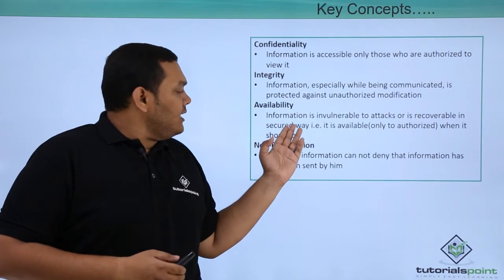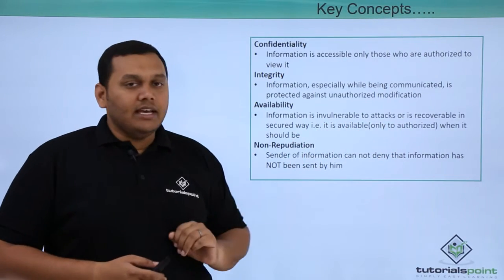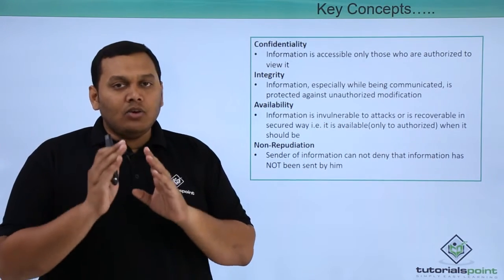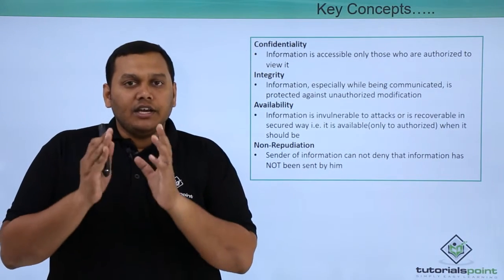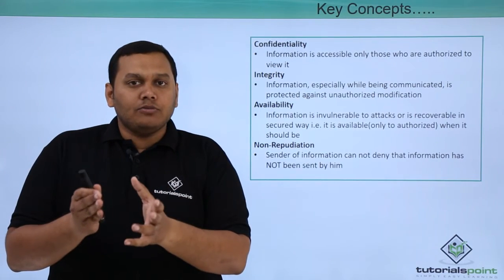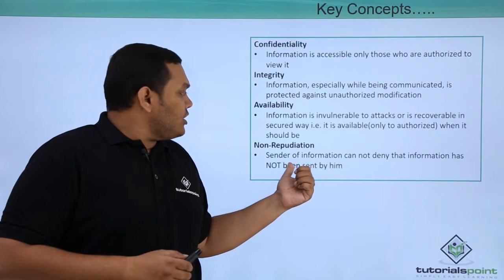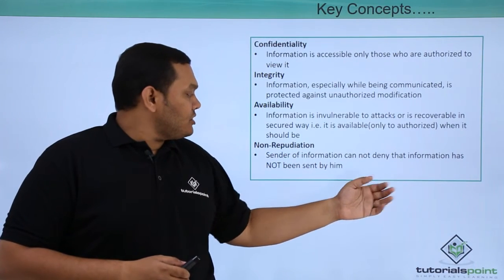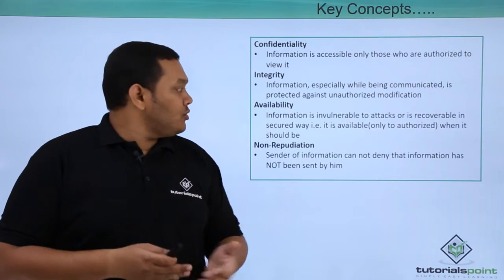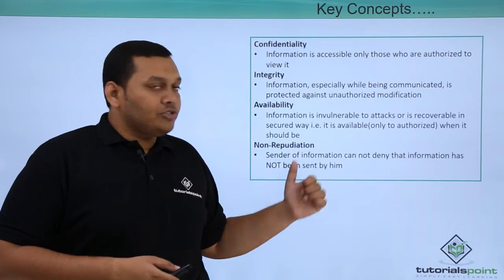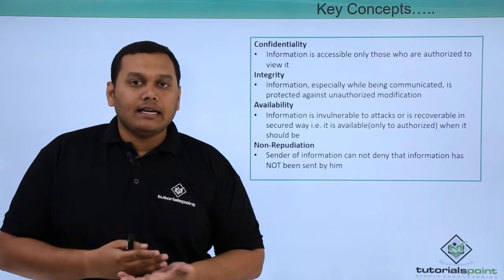Coming to availability — the information is invulnerable to attacks or is to be recovered in a secured way. It should be available when it needs to be, and only authorized people should be accessing it, so that data is not lost. Non-repudiation means the sender of information cannot deny that the information was sent by them — it should be authorized, available, and confirmed to have come from the correct domain or person.